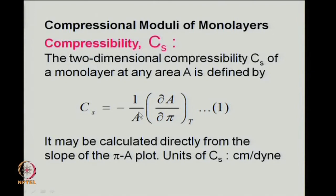The compressibility is expressed as minus 1 over A times dA/dπ at constant temperature. Clearly, the units of compressibility would be the inverse of surface pressure, since areas cancel out in terms of dimensions, leaving reciprocal π for deducing the units of surface compressibility. If we have force-area curves, we should be able to calculate the compressibility from the slope of those curves.